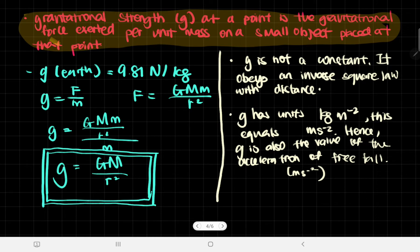Then we get the introduction to gravitational strength, which is denoted by g. What it's defined by is gravitational strength g at a point is the gravitational force exerted per unit mass on a small object placed at that point.